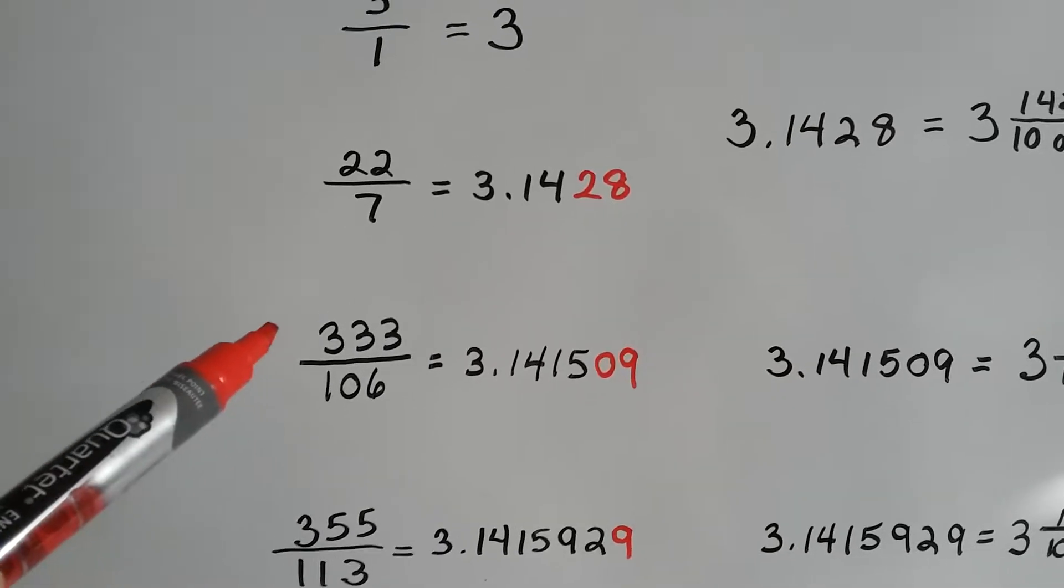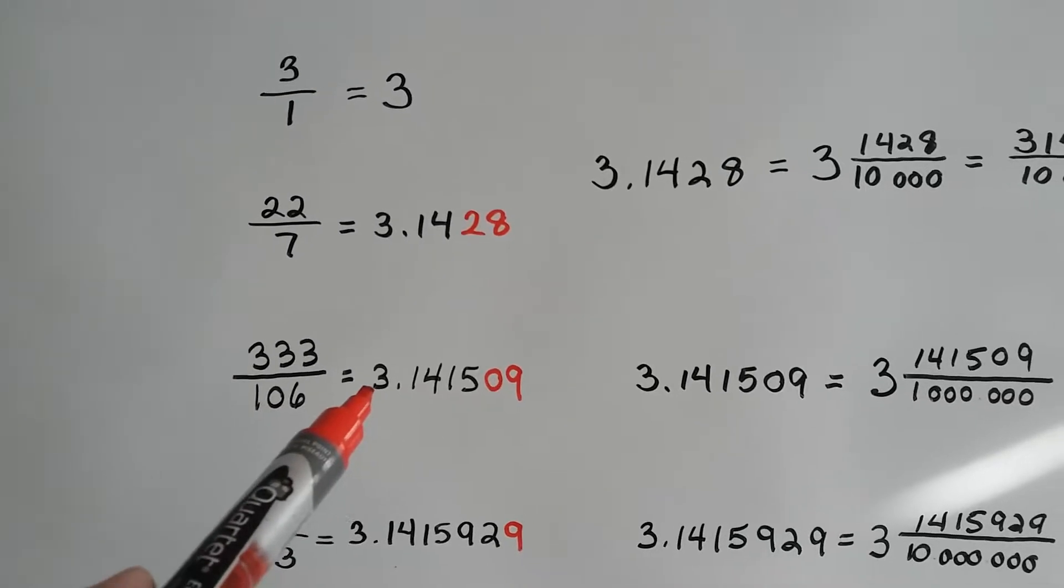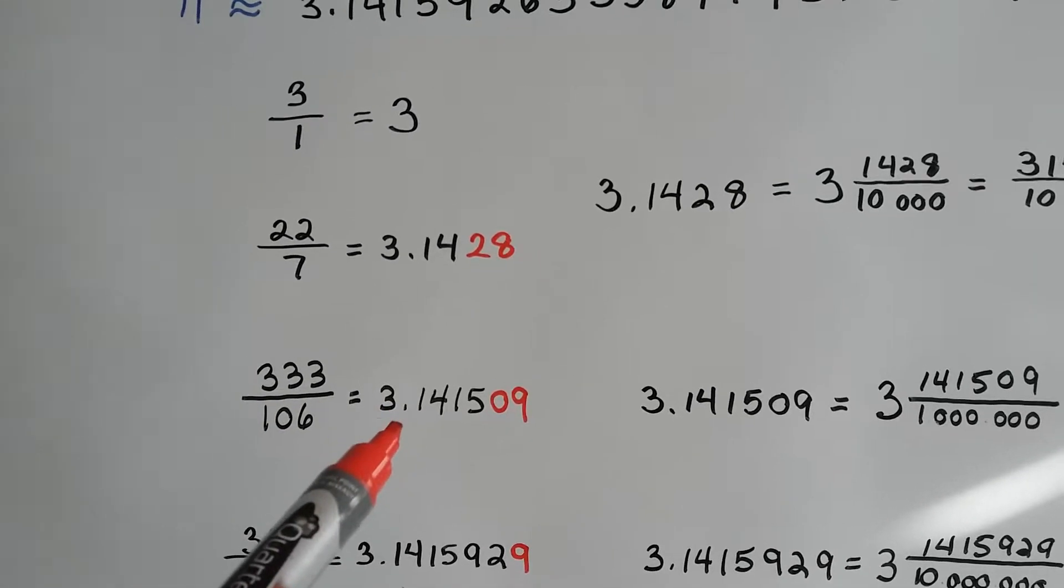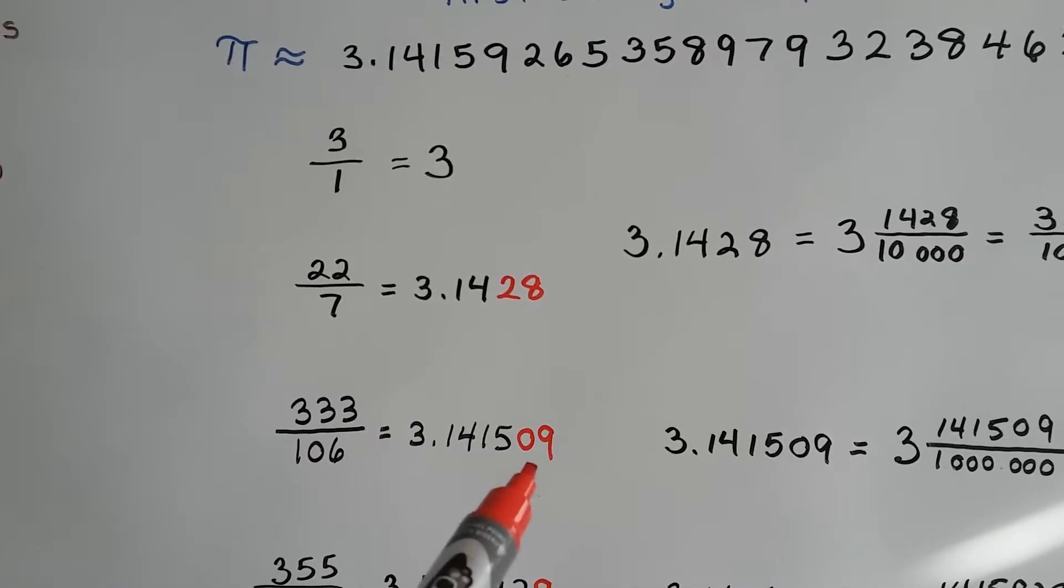We could also use 333 over 106. But, we're not using the exact numbers of pi. The 09 that this would equal as a decimal is wrong.